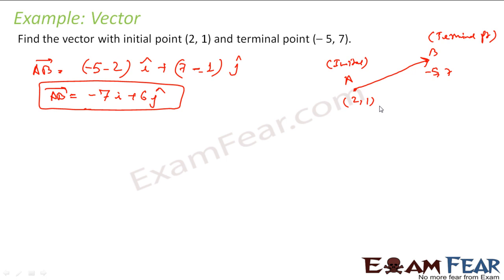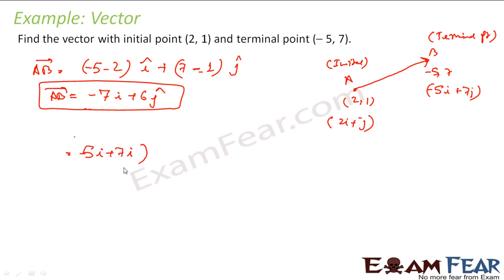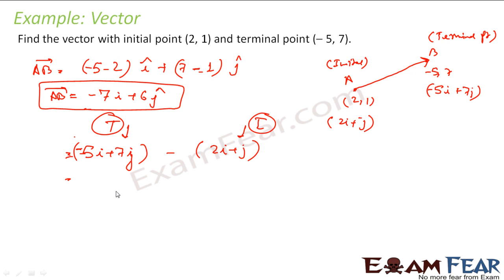Here, a is the initial point and b is the terminal point. So vector AB = terminal minus initial = (−5î + 7ĵ) − (2î + ĵ). That gives −5 − 2 = −7î, and 7 − 1 = 6ĵ. So vector AB = −7î + 6ĵ. Both approaches give the same result.